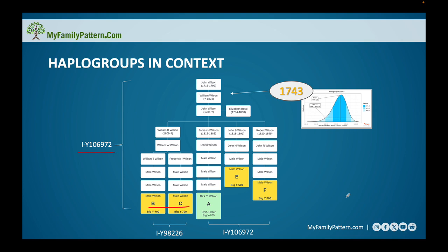Well, I know that everybody in this haplogroup here descends from this John Wilson 1784. I have verifiable documented evidence that proves it. But the mean here says 1743 when John here was born 1784.